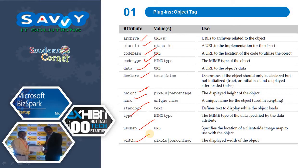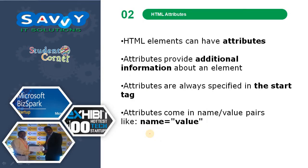All of these are used in the object tag. Some are optional and almost all are mandatory in the process. Now, commonly used HTML attributes: HTML elements can have attributes. Attributes provide additional information about an element and are always specified in the start tag. Attributes come in name-value pairs like name equals value.